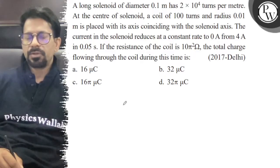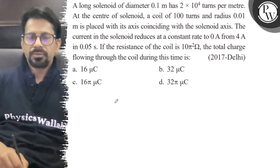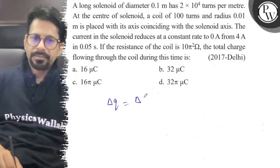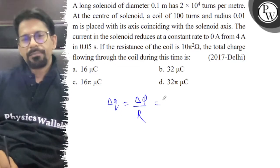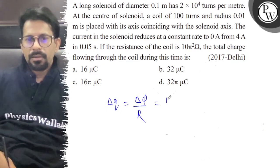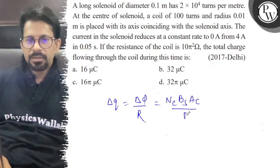If the resistance of the coil is 10π², the total charge flowing through the coil is calculated as: charge flow equals ΔΦ divided by R. ΔΦ is B into A, multiplied by N of the coil, B of the solenoid, and area of the coil, divided by R.